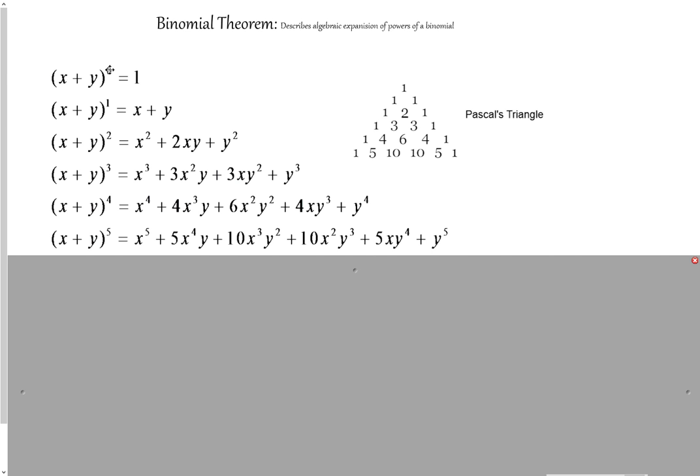A very basic form of a binomial is x plus y. We're looking at x plus y to the power of 0, 1, 2, 3, 4, 5. When we do algebraic expansion, this is what we get.